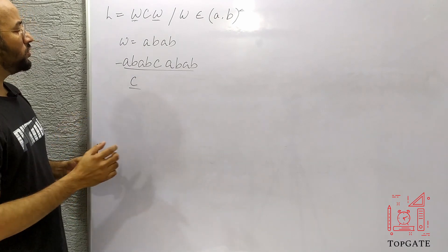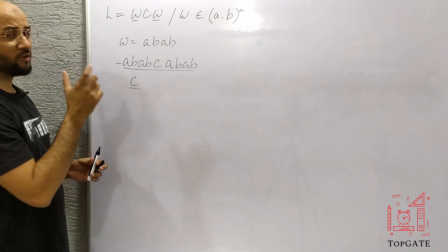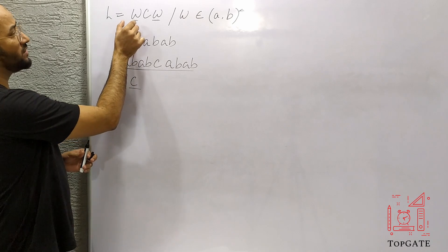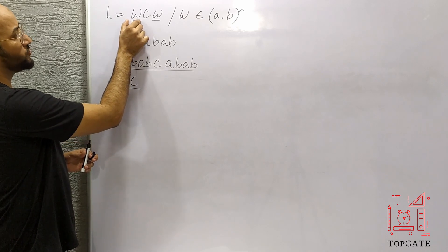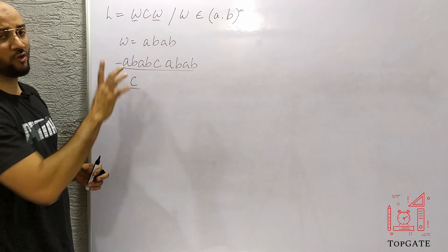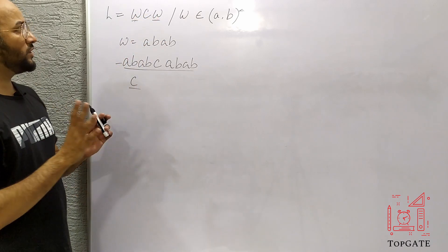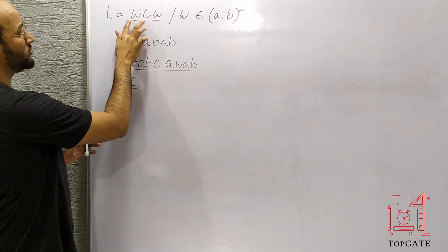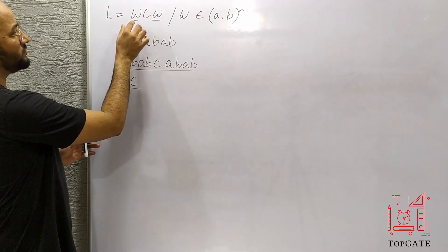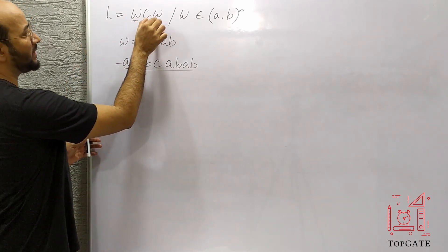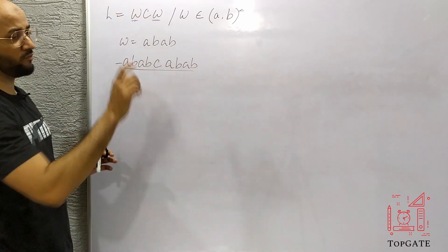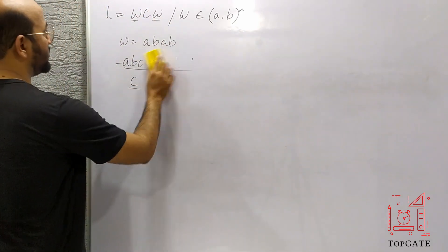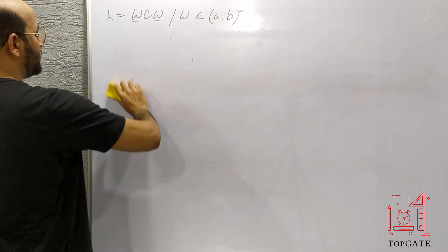The main important thing is to compare — to test whether the first part of the string is equal to the second part of the string. If it is equal, we are done. So we have to make a Turing machine for this language in which the two parts of the string are kept equal.